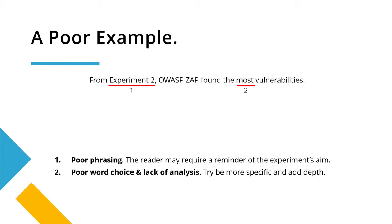There isn't much in this poor example's feedback, but it's still very common. The first point is Experiment 2 — it's just poor phrasing; there isn't much going on here. Maybe the reader doesn't remember Experiment 2 from the methodology, so make sure you remind the reader: what was Experiment 2? What did you do? What was the aim of Experiment 2?